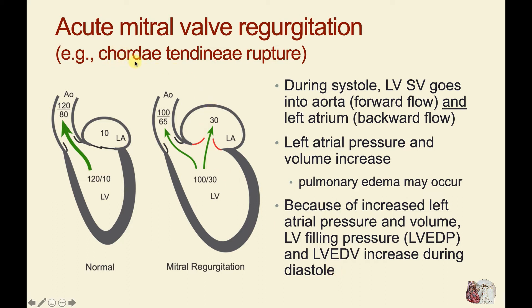With acute mitral regurgitation, this can occur following rupture of the chordae tendineae. When that happens, the mitral valve leaflets will bulge back into the left atrium during left ventricular systole, when left ventricular pressure is increased. This causes flow to go back into the left atrium as well as out into the aorta. So the regurgitation occurs during ventricular systole.